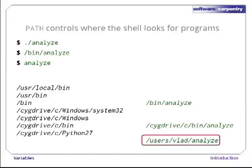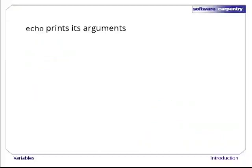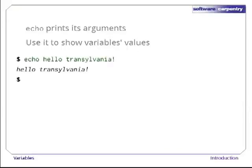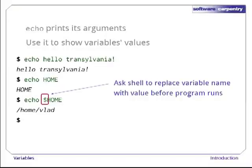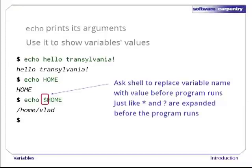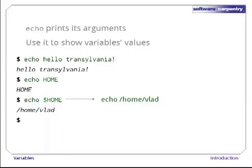Before we explore variables any further, let's introduce one more command: echo. All it does is print out its arguments. We can use it to show variable values. Let's make sure it works — echo hello Transylvania puts hello Transylvania as promised. Now let's try to show the value of the variable home with echo home. Whoops, that just prints home. Let's try instead: echo $home. The dollar sign tells the shell to replace the variable's name with its value. This works just like wildcards — the shell does the expansion before running the program we've asked for. Thanks to this expansion, what we actually run is echo /home/vlad, which shows us the variable's value.